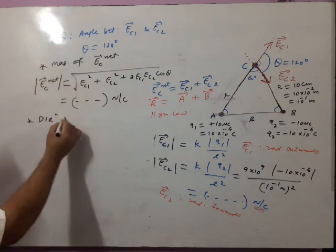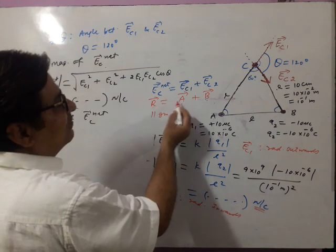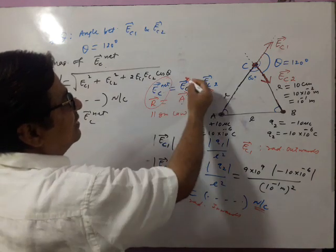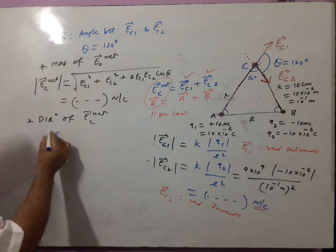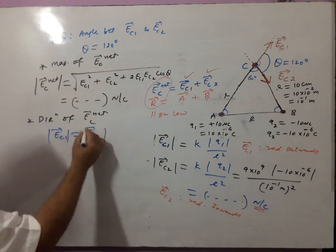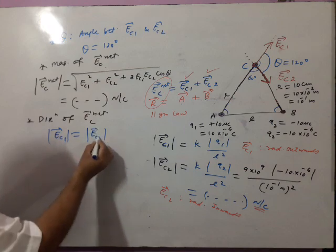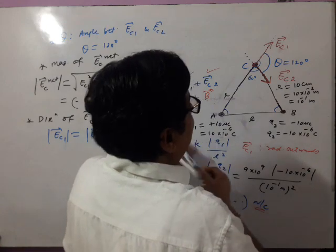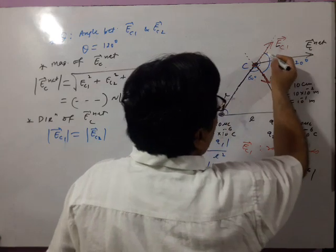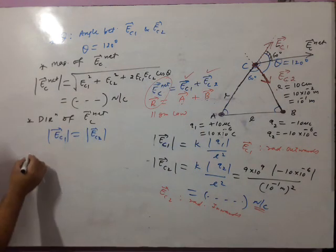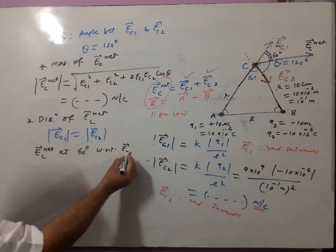Next is direction of net electric field at C. As per parallelogram law, the resultant vector lies somewhere in between A vector and B vector — so EC net will lie somewhere in between EC1 and EC2. Since magnitudes of EC1 and EC2 are equal, the resultant lies exactly at the midpoint — half of 120° equals 60°. So EC net vector lies at an angle of 60 degrees with respect to EC1 vector or EC2 vector.